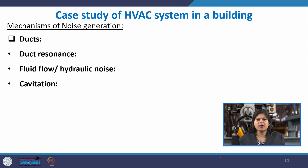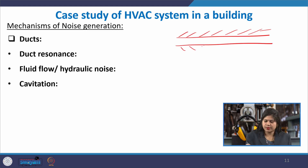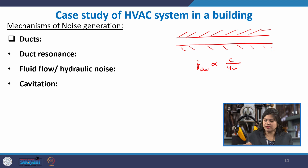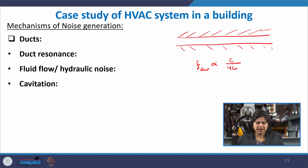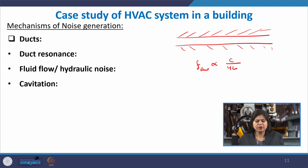Ducts are a major part of the HVAC system and act as confined acoustic cavities. The fundamental frequency of any duct is proportional to C/4L and depends on the duct geometry, primarily its length. When fluid or air flows through the ducts, the flow can excite the duct at its resonance frequency, producing sharp tonal sounds — making duct resonance a very common noise source in HVAC ducting.